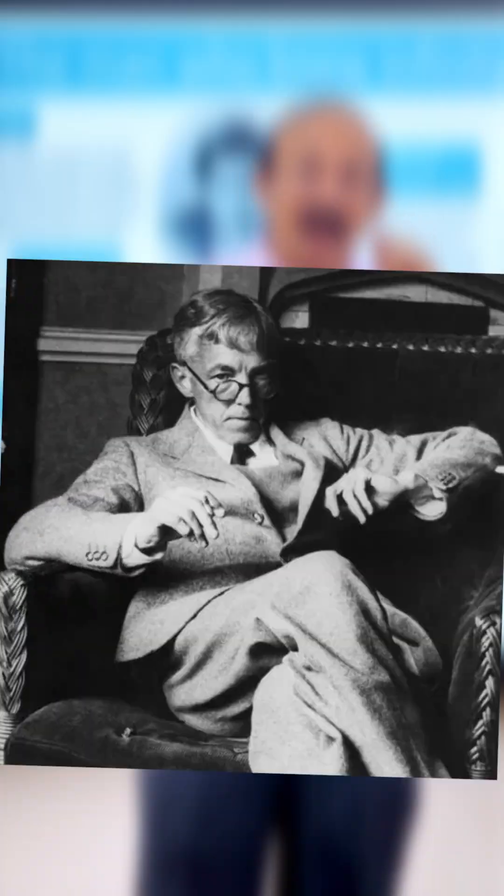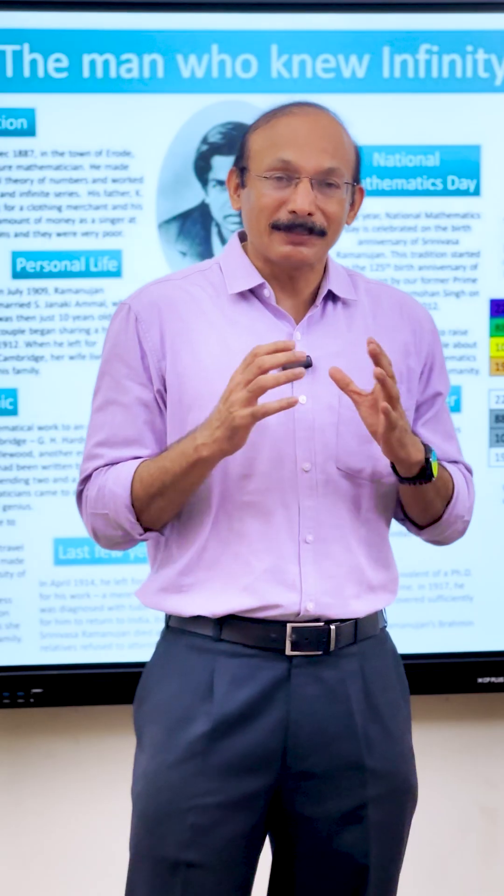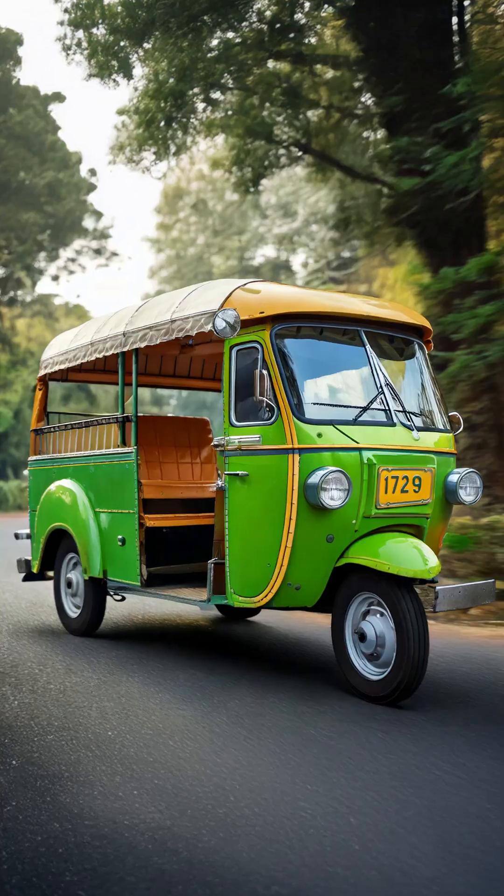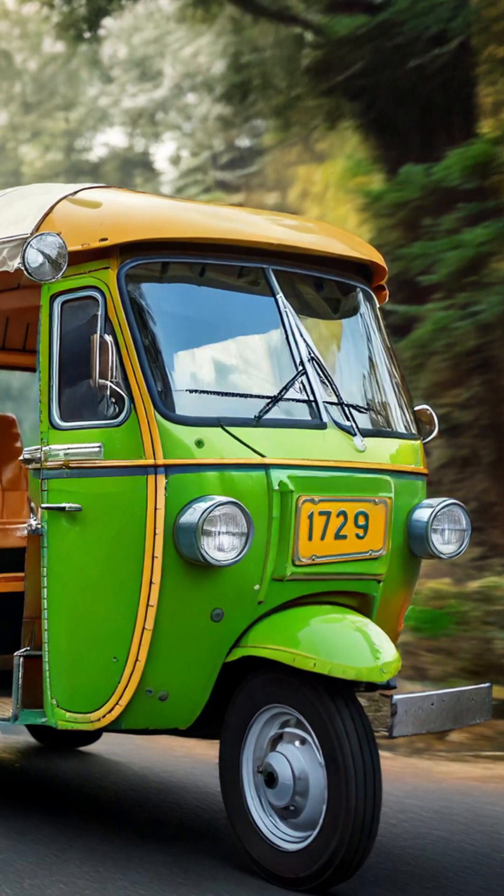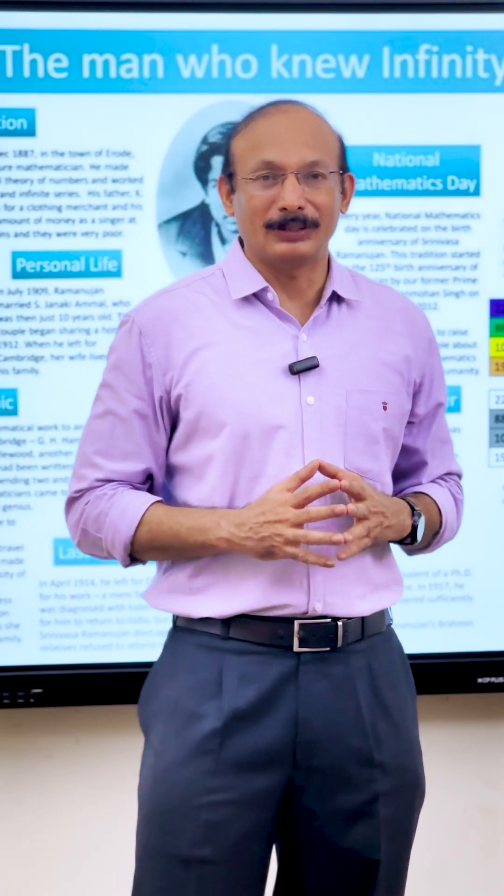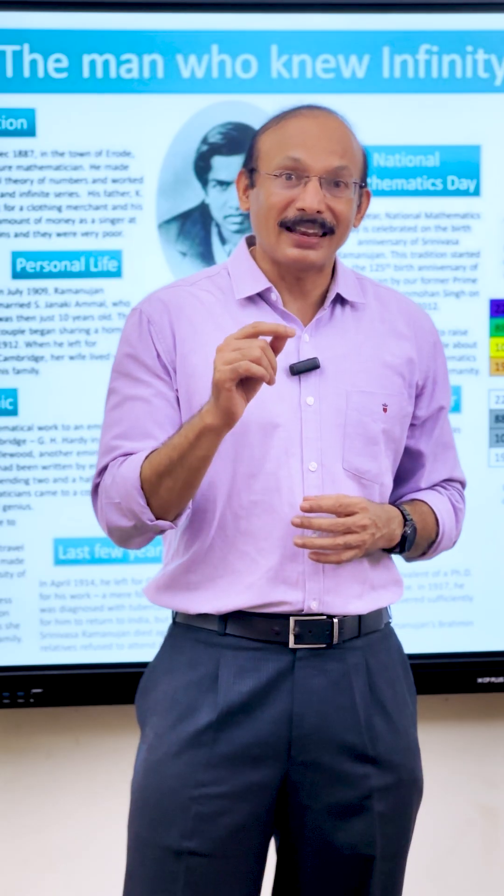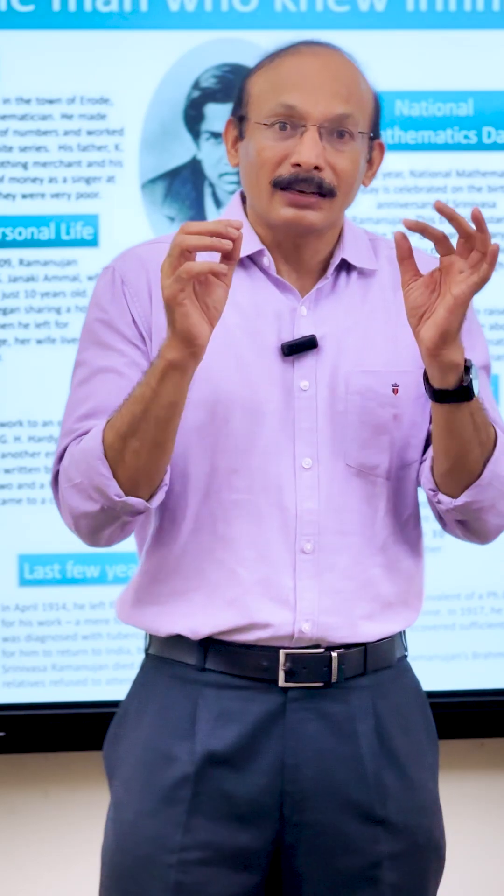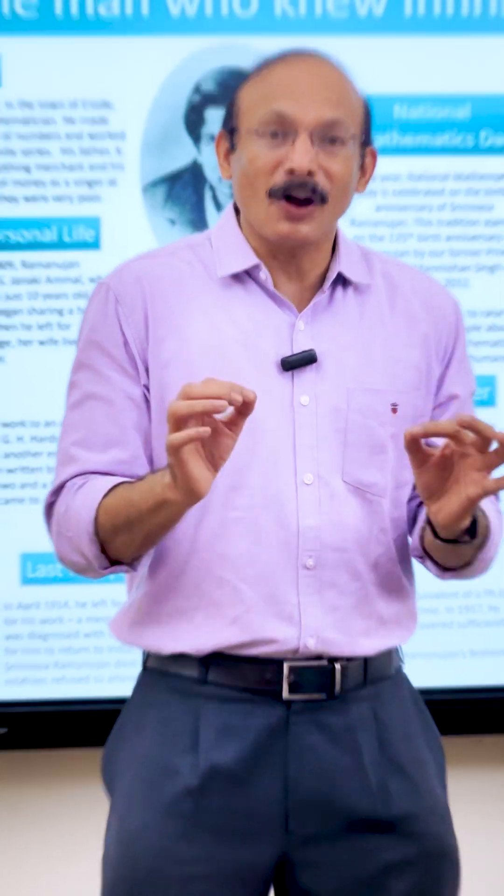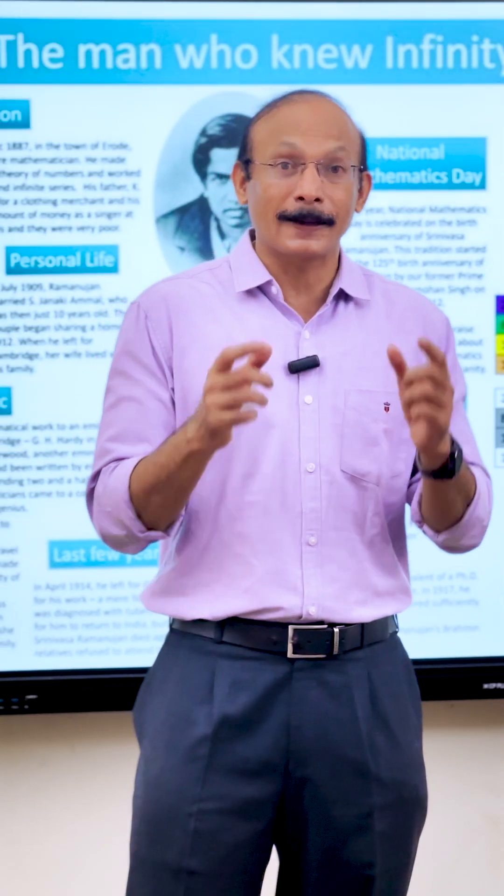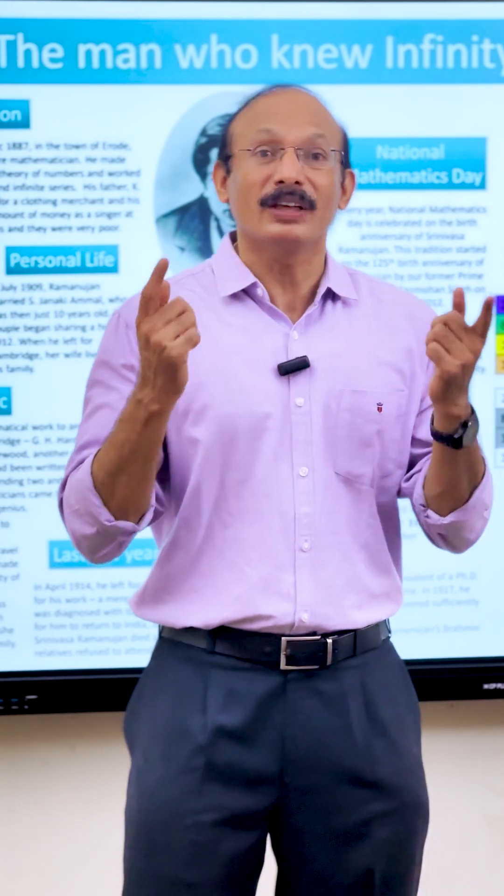One time, Hardy visited Ramanujan in the hospital. 1729 is the smallest number which can be expressed as the sum of the cubes of two different numbers.